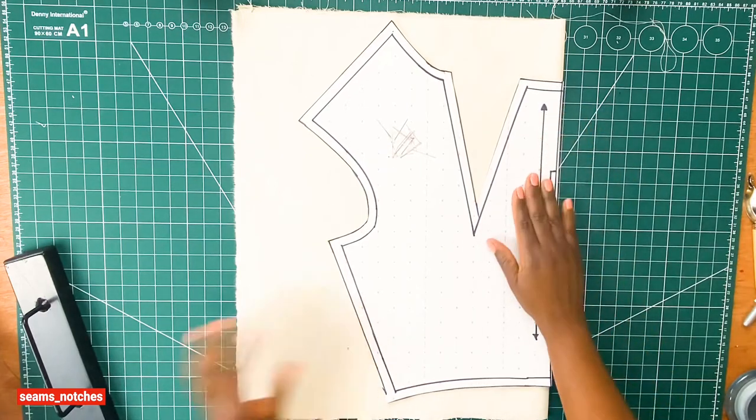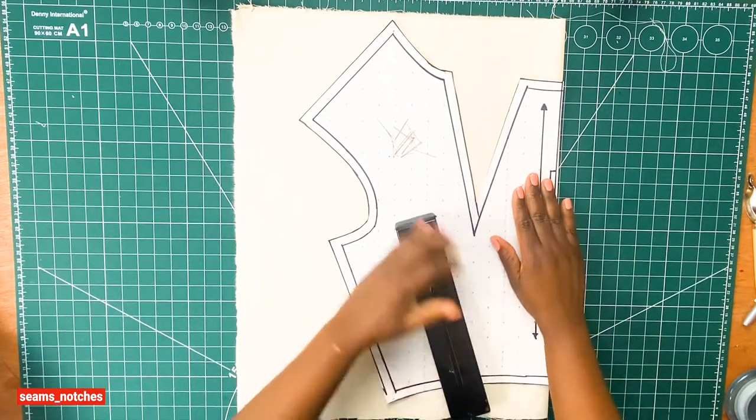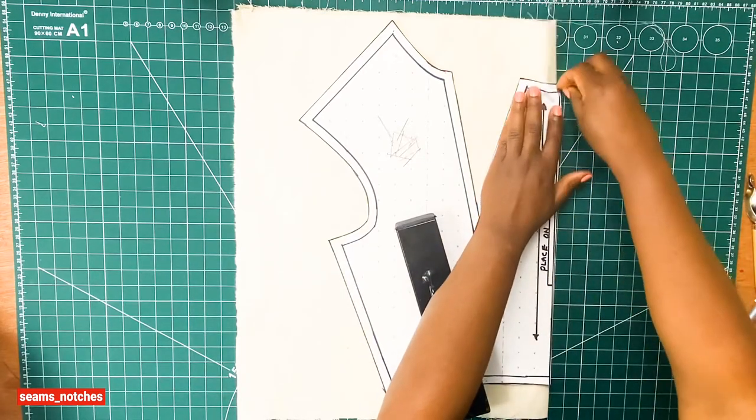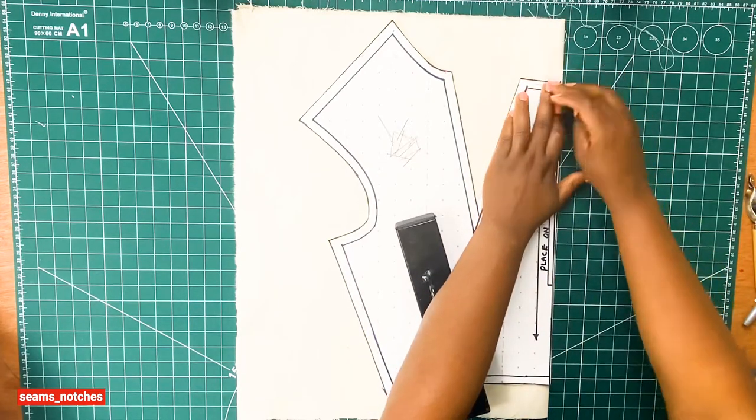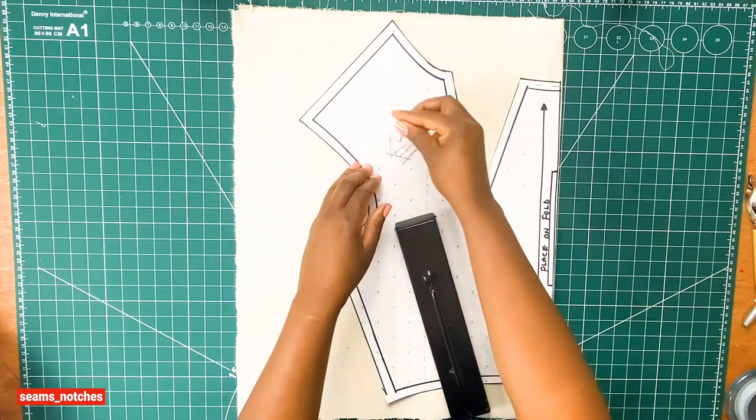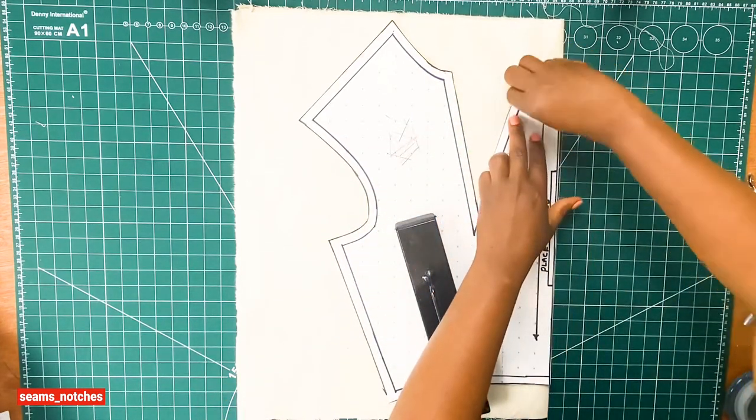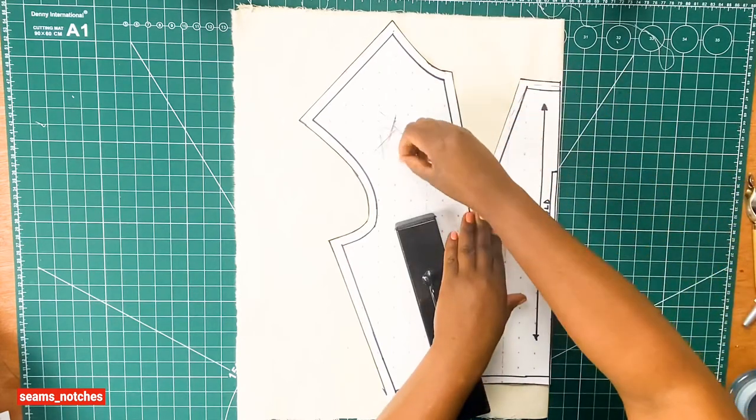Using my straight or sewing pins, I am going to secure my pattern on my fabric, making sure it doesn't slip away. At this point, I am gently using my straight or sewing pin to secure my pattern.